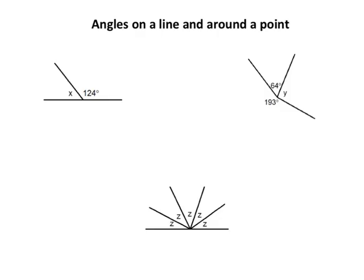We're looking at angles on a line and around a point. You should know that angles on a line where a line is cut in one position add up to 180, and you should know that the angles around a point, like on the second example over here on the right, should be adding up to 360.